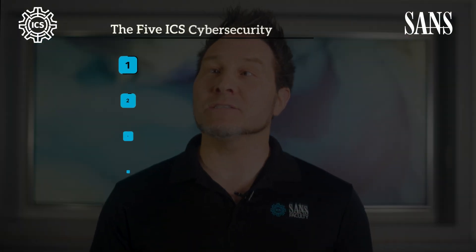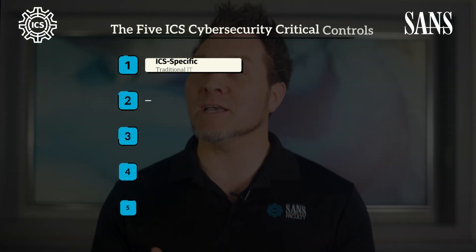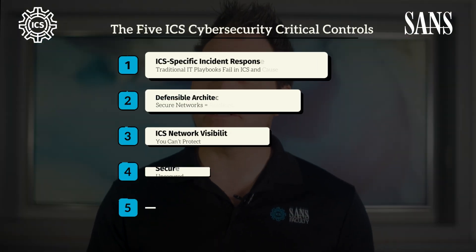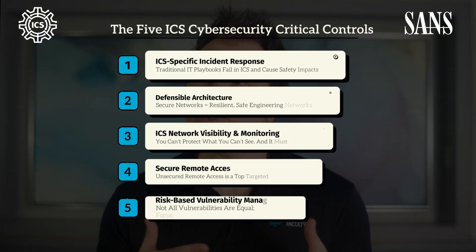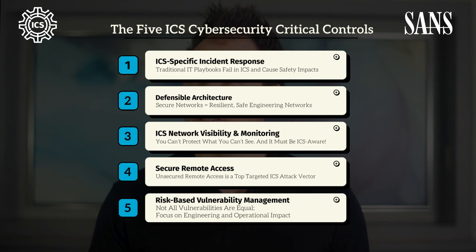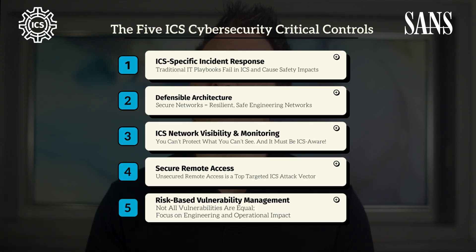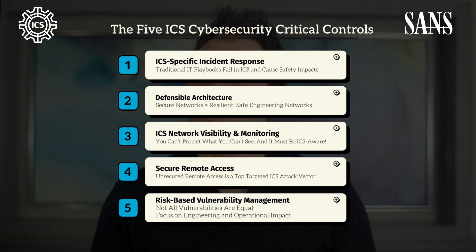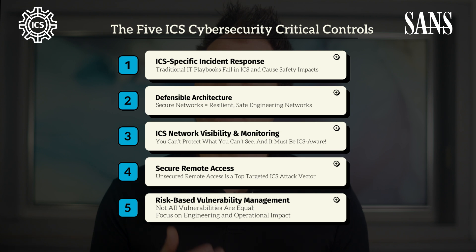Number one: ICS-specific incident response — because traditional IT playbooks fail in ICS and cause safety impacts. Number two: ICS-defensible control system network architecture. Secure networks equals resilience and safe engineering networks.